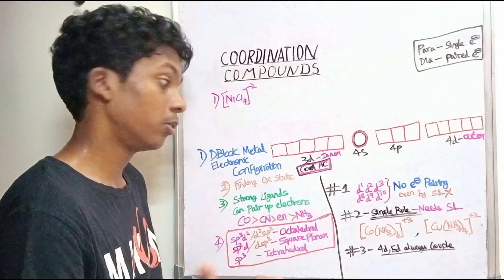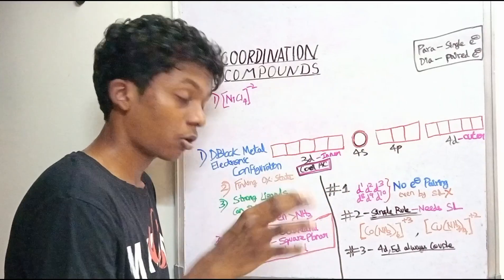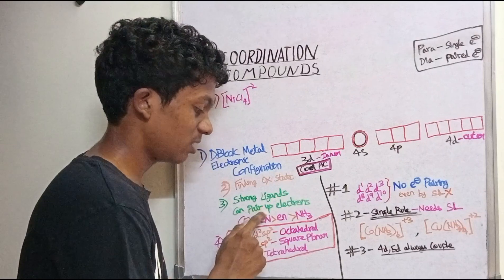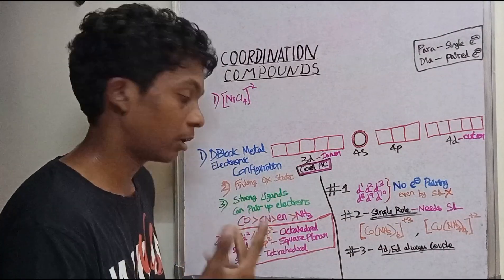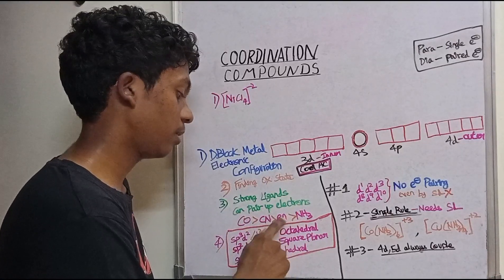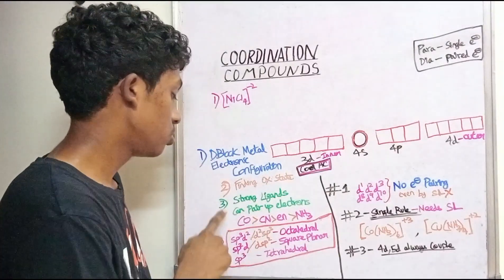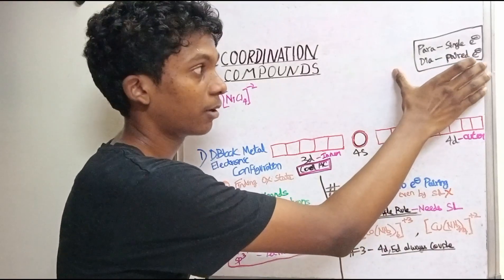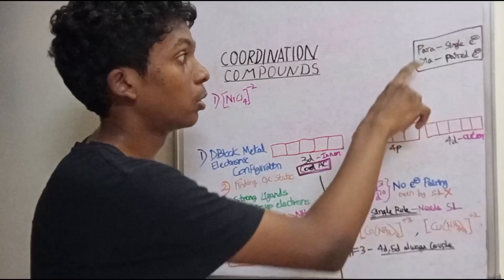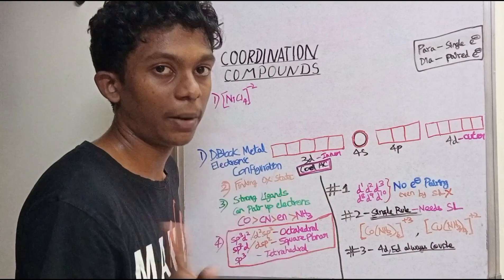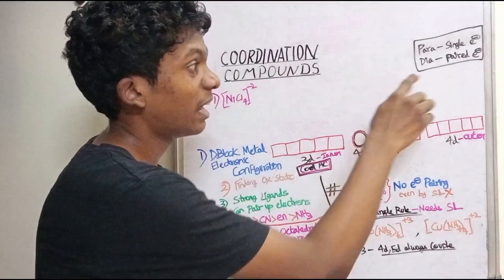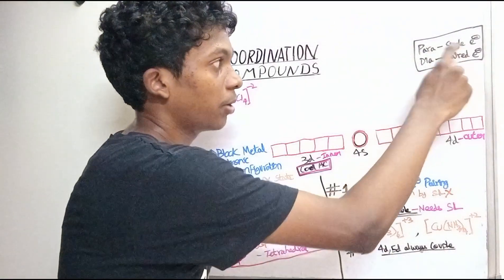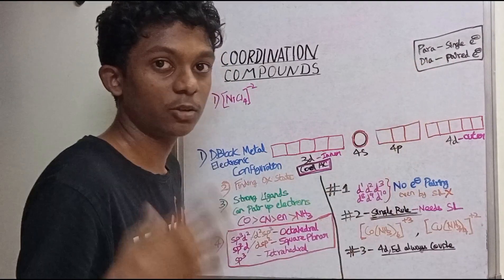Strong ligands can pair up electrons. The strong ligands in order are: CO is the strongest, then CN, then en (ethylenediamine), then NH3. The mnemonic is 'Amma in Canada or Colombia.' For paramagnetic versus diamagnetic: if there is a single unpaired electron, it is paramagnetic. If all electrons are paired, it is diamagnetic.